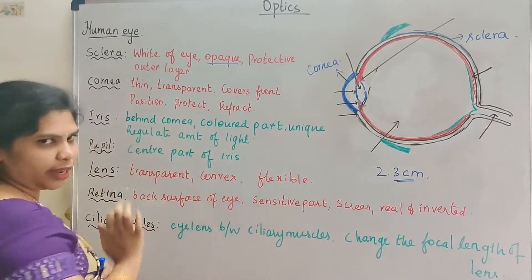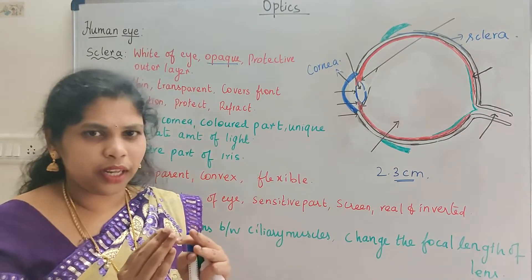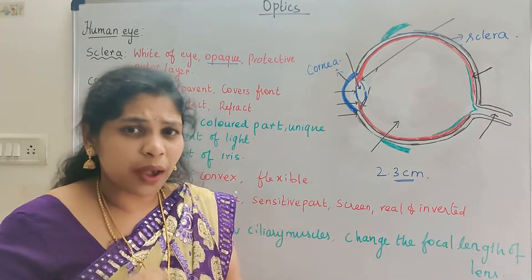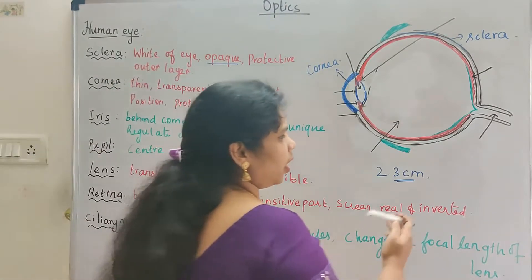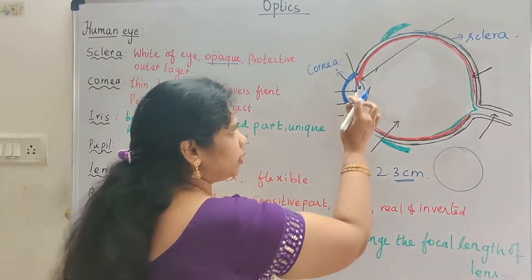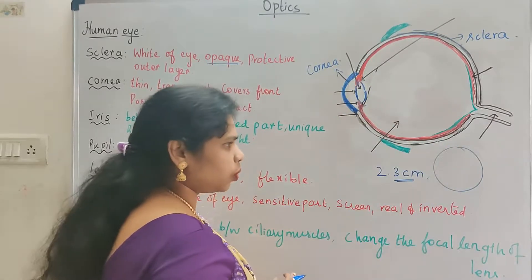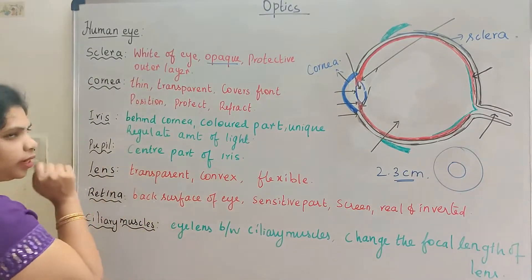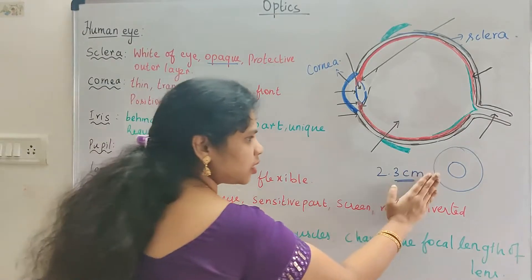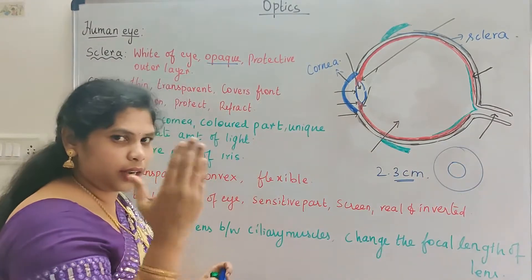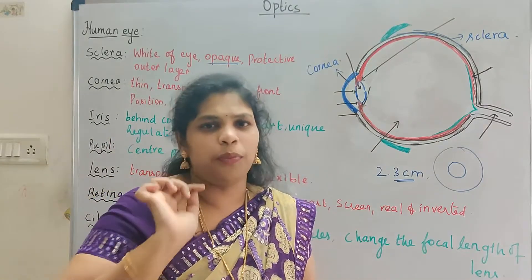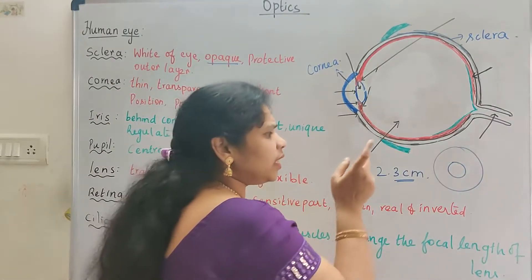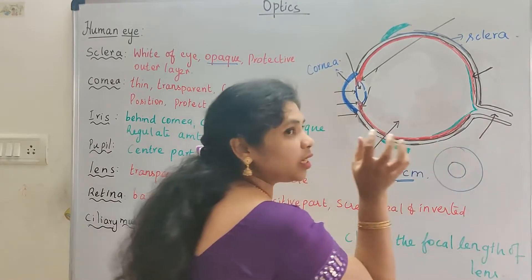The iris regulates the amount of light. Light is controlled when we use our eyes. In the iris, there is a small opening — and there is a black color there. This is the pupil. In the iris, you control the pupil.